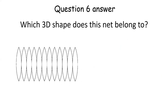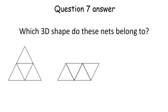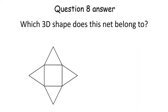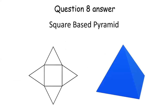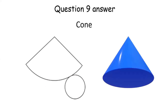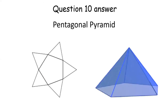Question six: this is a sphere. Question seven: this is a tetrahedron. Question eight: this is a square based pyramid. Question nine: this is a cone. Question ten: this is a pentagonal pyramid.